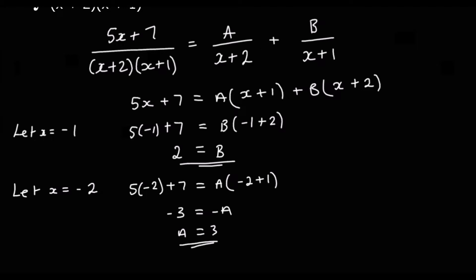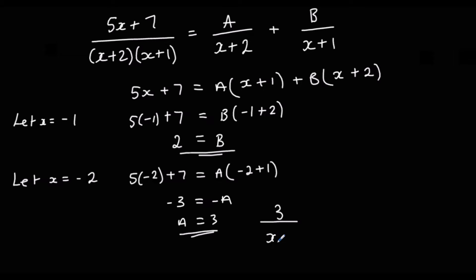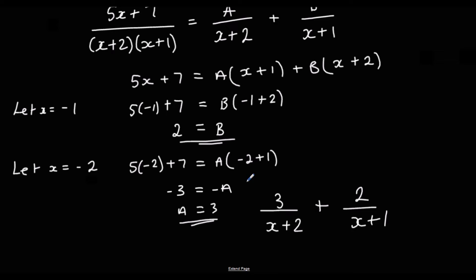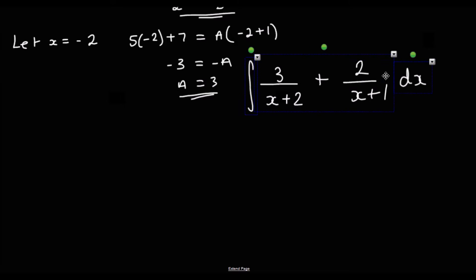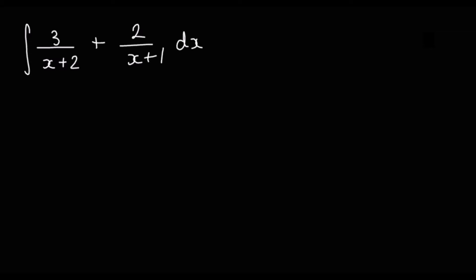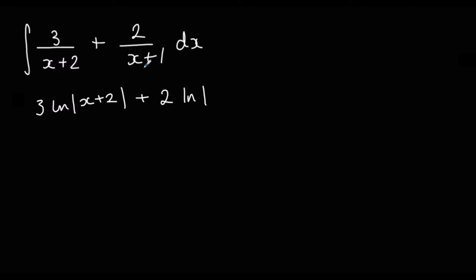Now we've split it into partial fractions: 3 over (x plus 2) plus 2 over (x plus 1). So we've changed the question to the integral of 3 over (x plus 2) plus 2 over (x plus 1) with respect to x. Integrating 1 over x-type terms gives ln. So we get 3 ln(x plus 2) plus 2 ln(x plus 1), dividing by the bracket differentiated (which is 1), plus c.